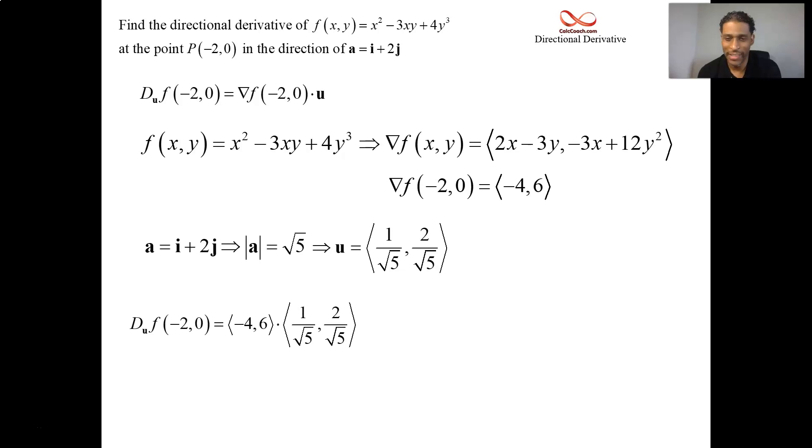So now we'll dot these two and we'll have the number that measures the steepness of the surface at that point in that direction. Negative 4 over sqrt(5) plus 12 over sqrt(5). 8 over sqrt(5). Leave it. I mean, would it look much better if you say 8 sqrt(5) over 5? Let's just leave it as it is. And that's it. Good job.